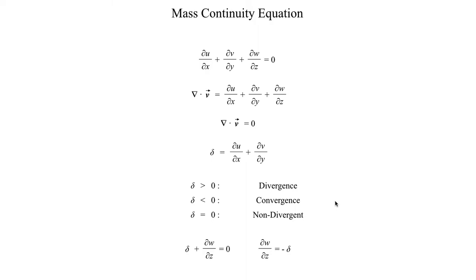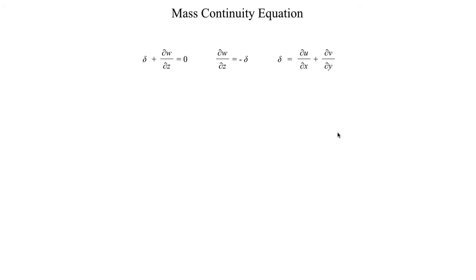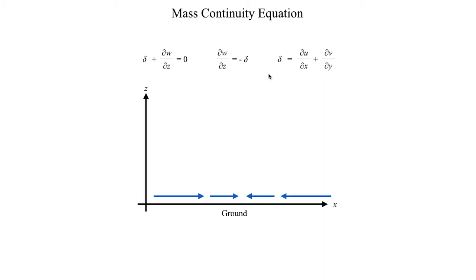Let's take a look at how this incompressible form of the mass continuity equation can actually model the flow patterns in the atmosphere. Consider a flow pattern where this represents the ground — the wind cannot go into the ground, so if it's going to move in the vertical direction, it would have to go up or down. We'll ignore the meridional component for the sake of simplicity, so here delta is just going to equal du/dx.